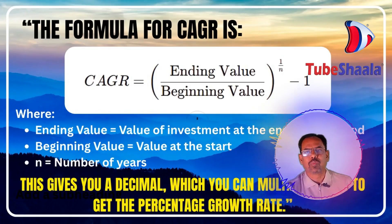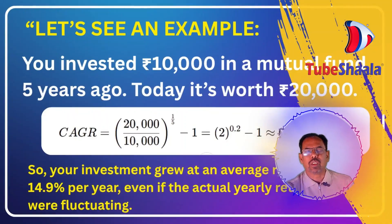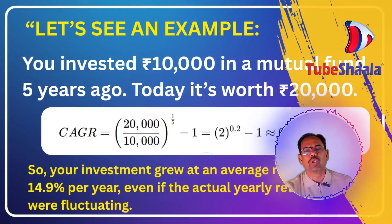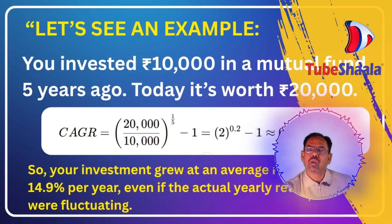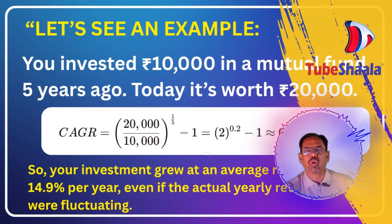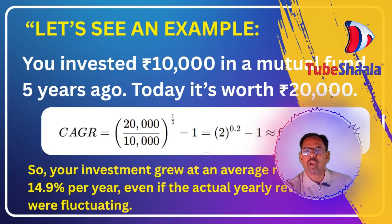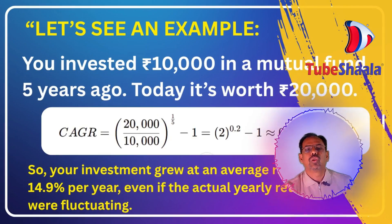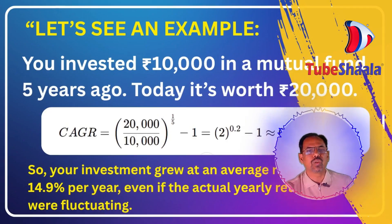Let us see an example. You invested Rs. 10,000 in a mutual fund five years ago, and today it is worth Rs. 20,000. Then CAGR = (20,000 ÷ 10,000) ^ (1/5) − 1 = 2 ^ 0.2 − 1 ≈ 0.149, which equals 14.9%. So your investment grew at an average rate of 14.9% per year, even if the actual yearly returns fluctuated.